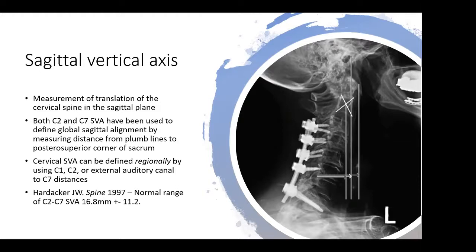If you use the C2 global sagittal vertical axis, you are essentially looking at the cervical, thoracic, and lumbar spine in combination. Whereas the C2 SVA — which goes from the C2 body to the posterior inferior aspect of C7 — allows you to look just at the cervical spine. That's the regional measurement of cervical sagittal vertical axis. The normal range for C2 to C7 SVA is around 16.8 millimeters.